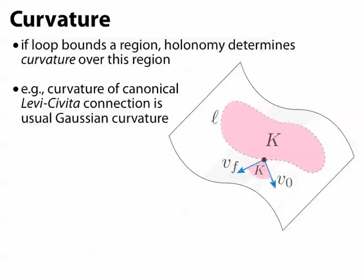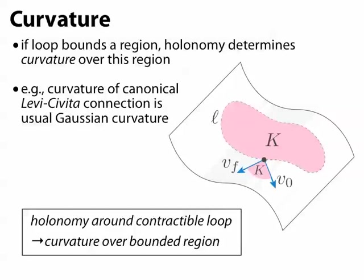But in general, the thing to remember is that the holonomy around a contractible loop tells us what the curvature is over the region bounded by that loop.